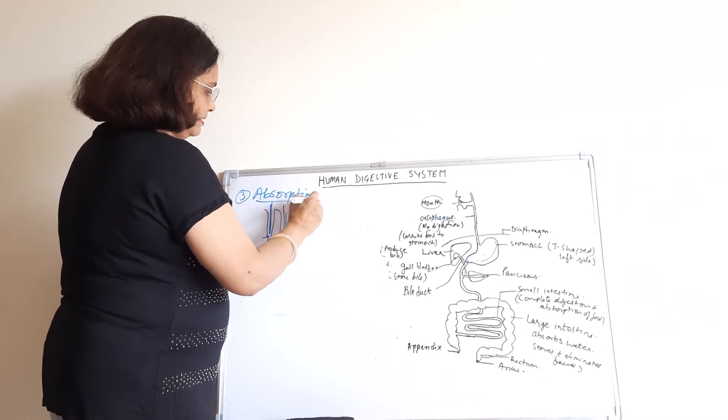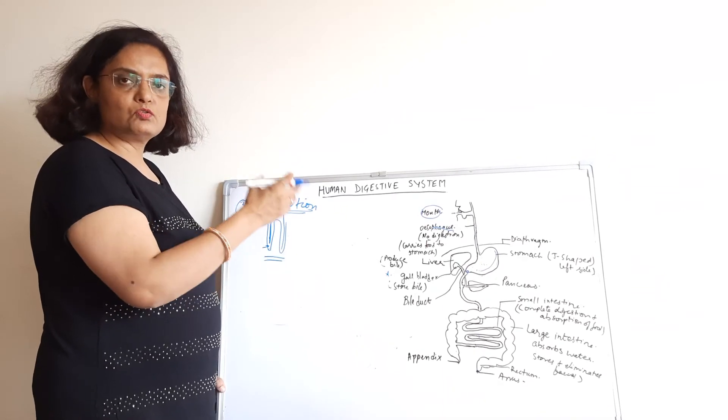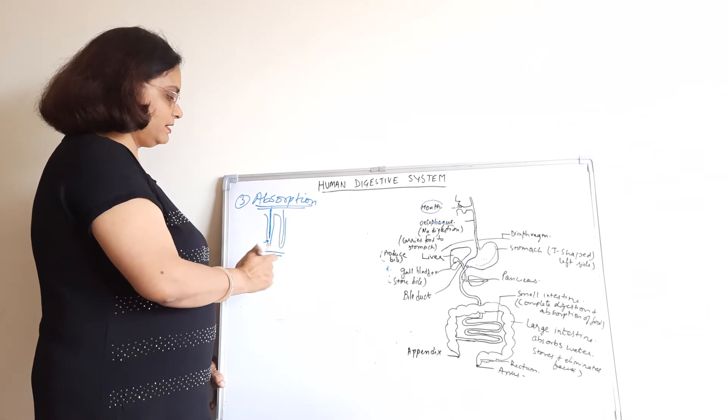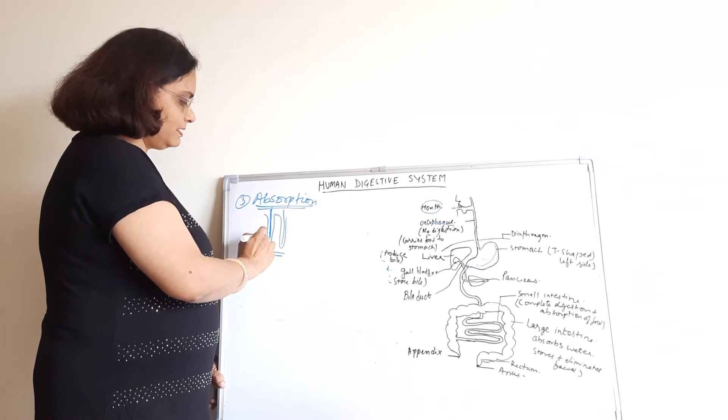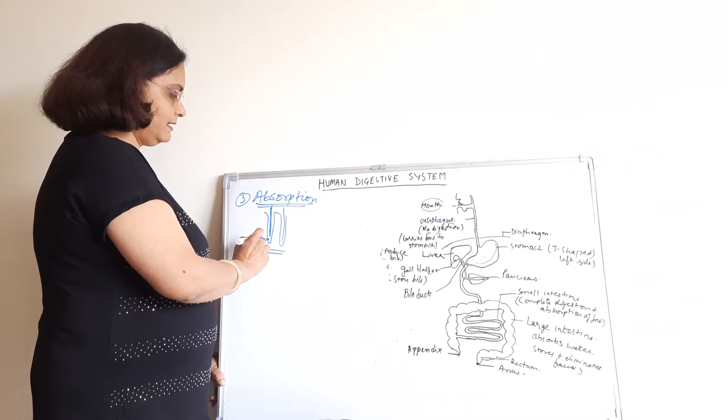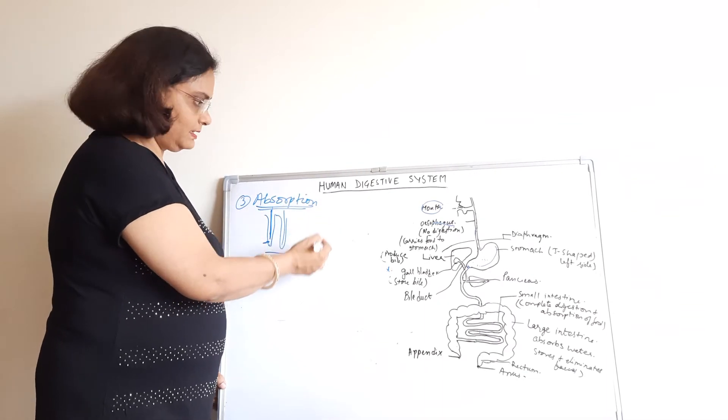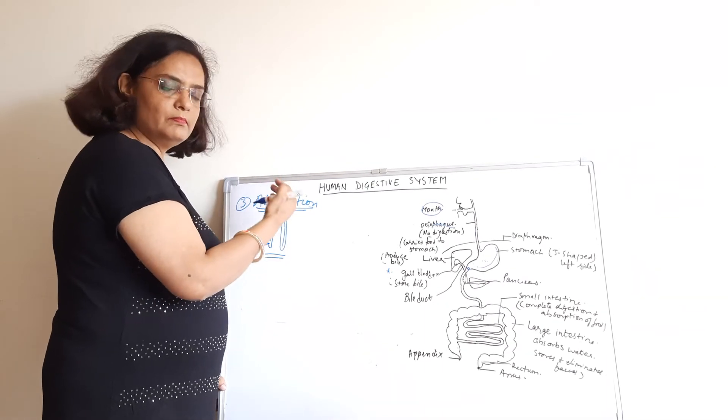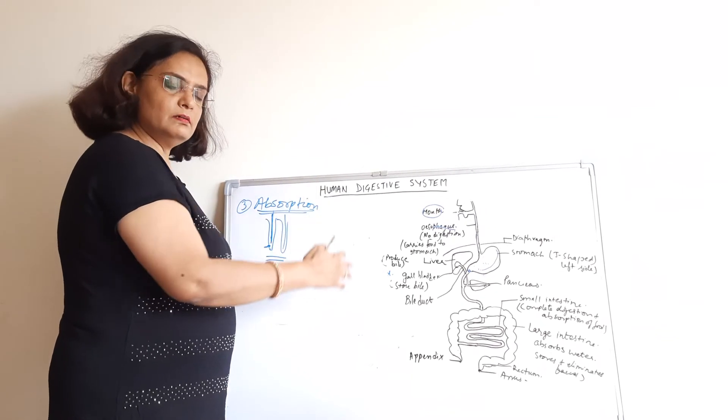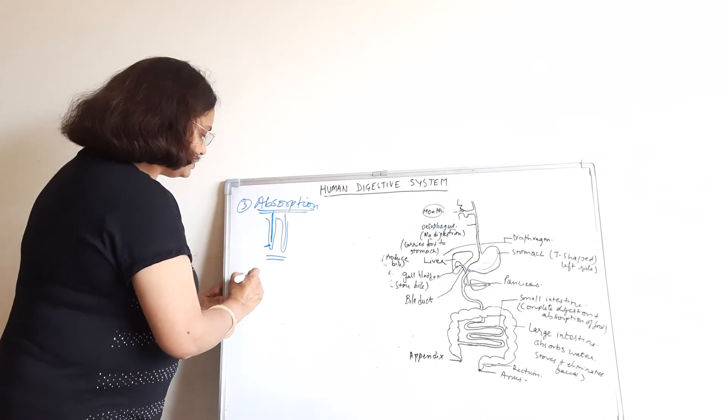This is called absorption. The complex food that was digested into soluble form now goes into the blood through the villi. The blood capillaries are present in the villi and the digested food is circulated in our body through blood.